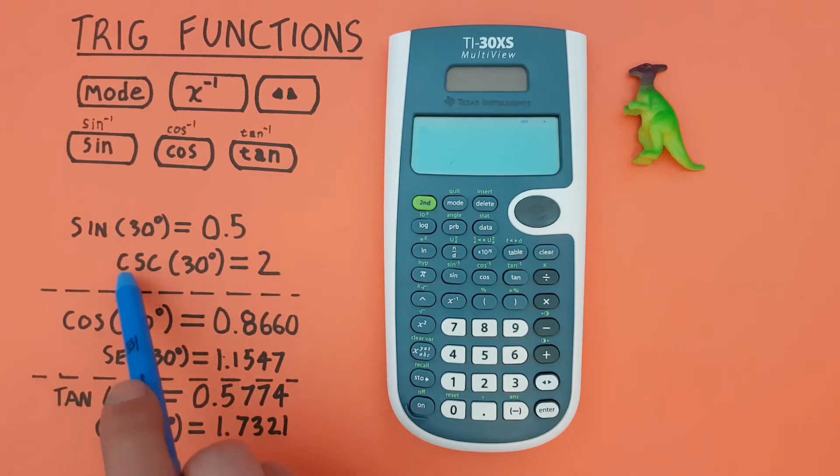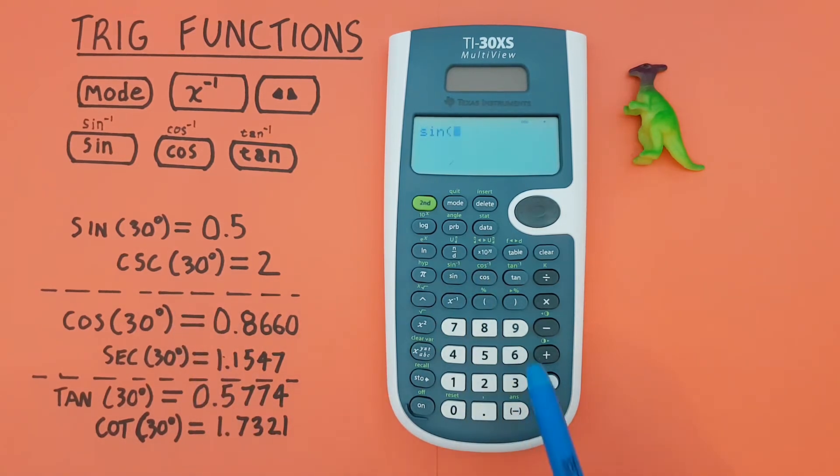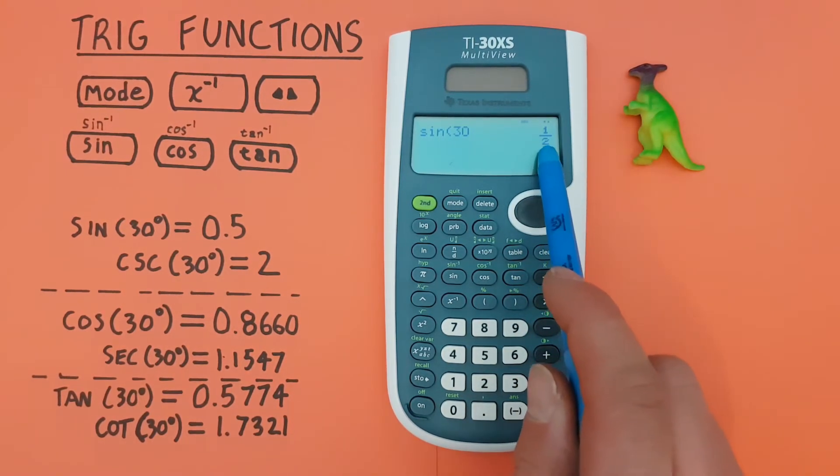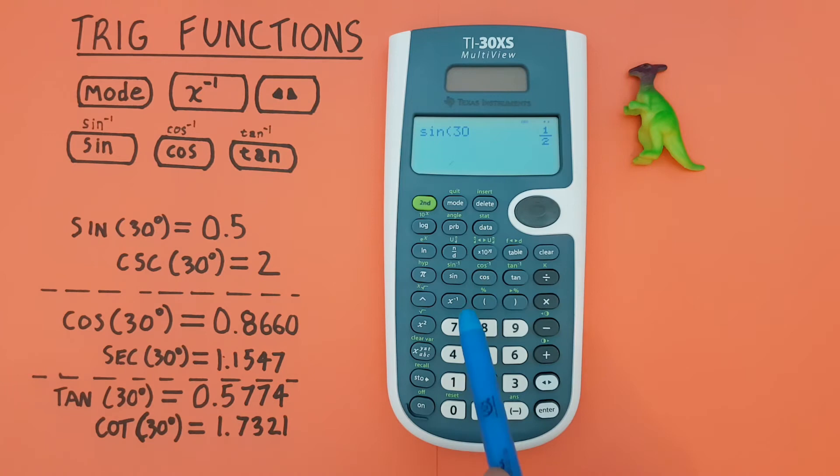So, for cosecant of 30 degrees, what we do is go sine of 30, solve that, and remember that gave us 1 over 2, or a half, and then we inverse that with the inverse key here. Press enter, and we see we get a cosecant of 2.